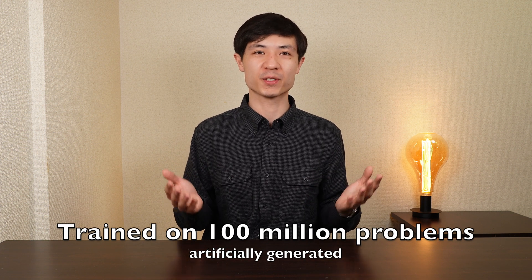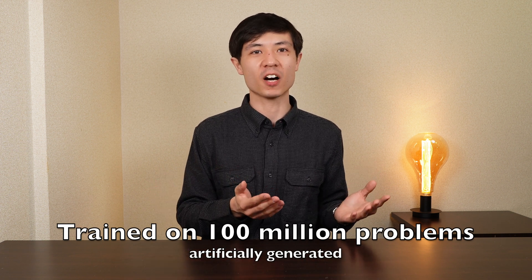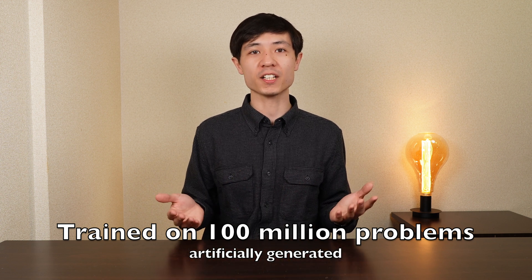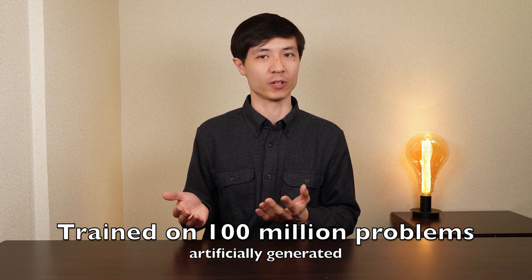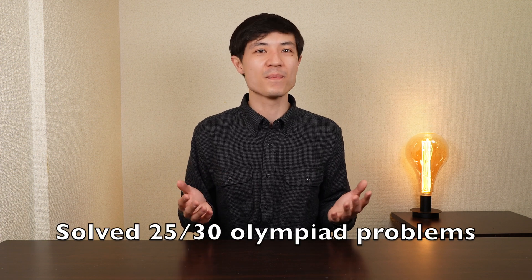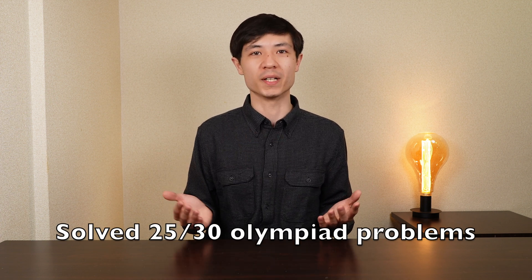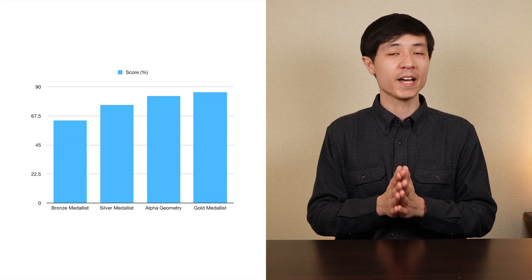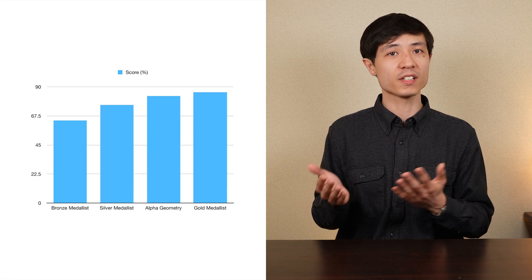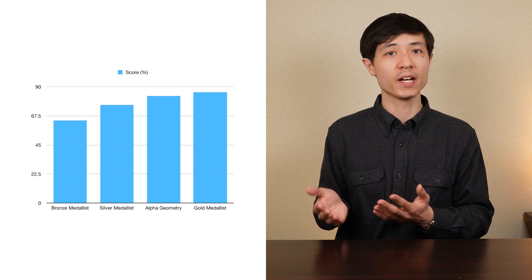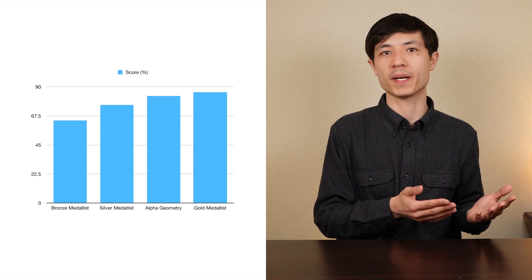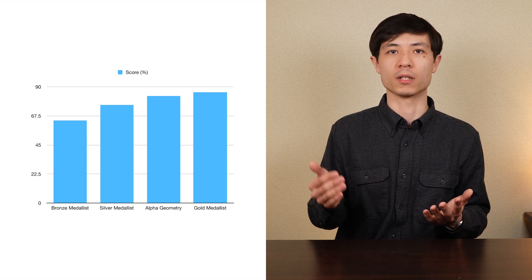AlphaGeometry: its practical performance. AlphaGeometry was trained on 100 million geometry problems, sometimes involving auxiliary constructions, which were all generated artificially with the process described before. It has then been tested on the 30 latest geometry problems of the International Math Olympiads, and it managed to solve 25 of them, accounting for a total score of around 83%. As an attempt of comparison, at this competition, bronze, silver and gold medalists have average scores of 64, 76 and 86 percent respectively, placing the algorithm above the silver and right below the gold.